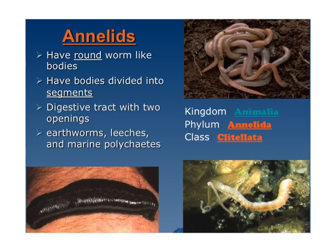The annelids are like the earthworms that you see outside, especially after it rains. They have round, worm-like bodies. The bodies are divided into segments, and their digestive tract has two openings. Some examples are earthworms and leeches. They are in the kingdom animalia and the phylum annelida — that's how we get annelids.